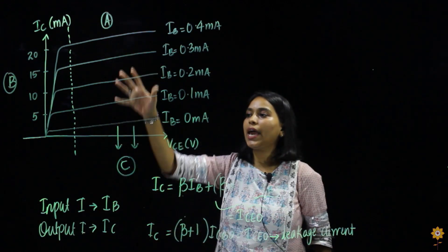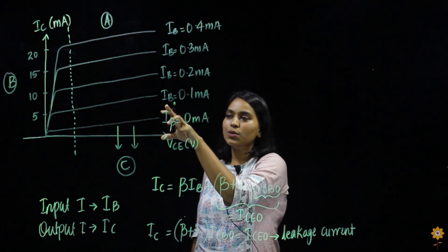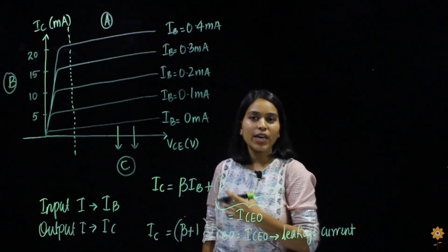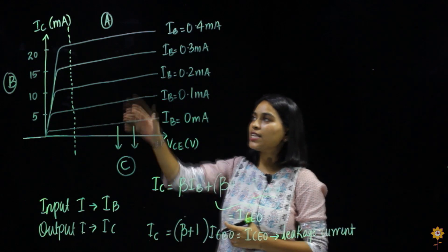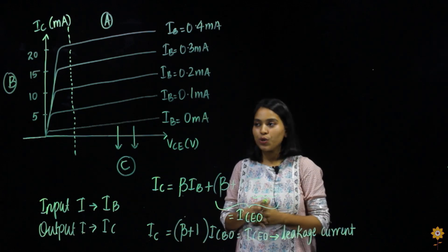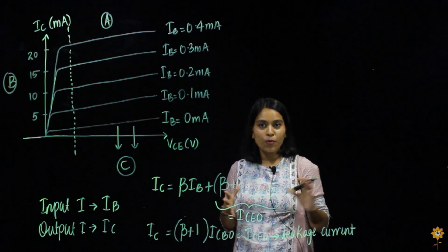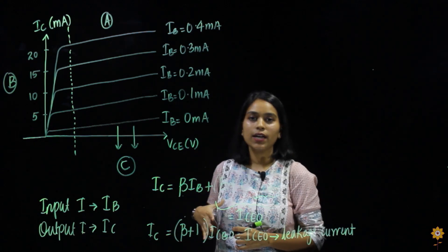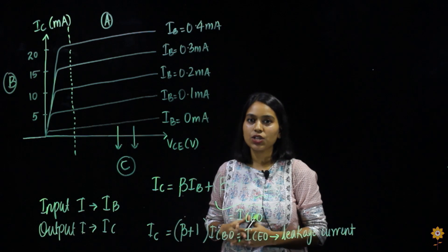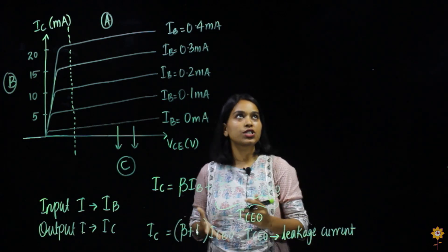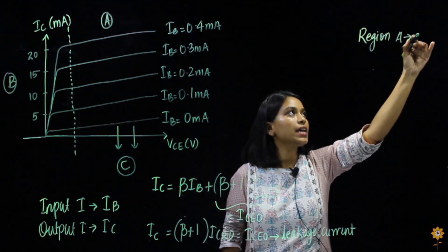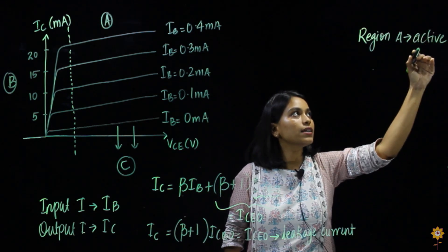In region A, when my input current is 0.1 milliamps my output current is 5 milliamps — certainly amplification is happening. So in region A, amplification is taking place. As shown in the region of operation table from the previous video, when amplification is taking place the region of operation is nothing but the active region. So region A is the active region.